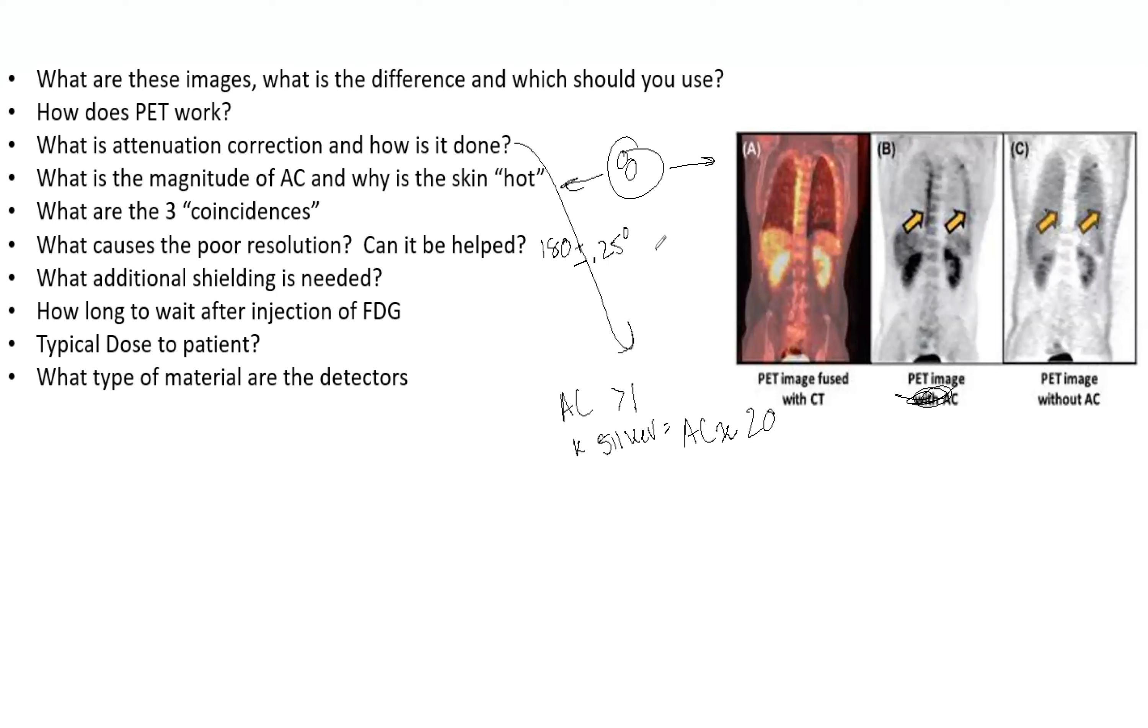This plus or minus 0.25 degree variability limits resolution to about two millimeters. And no, there's at least at this point, nothing we can do about that.